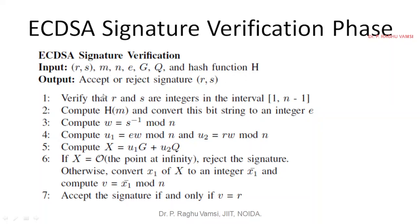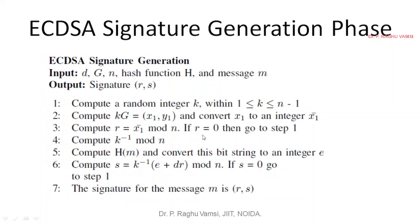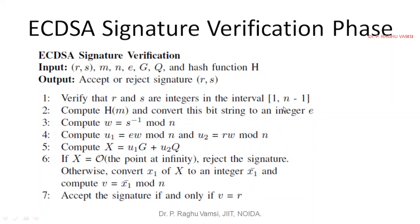Then perform the computation of the message. You have a message sent. Send it to the cryptographic hash function and convert this bit string to integer e, just as you have done in the signature generation. Once you do this, w equals s inverse, that is signature inverse mod n.